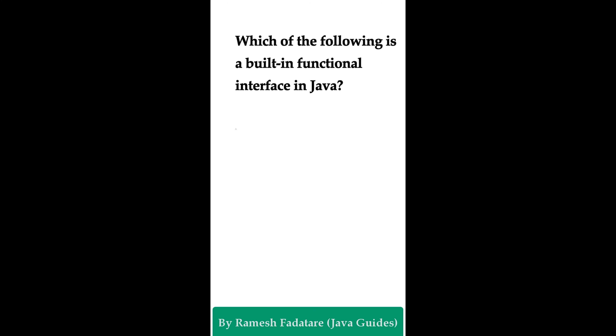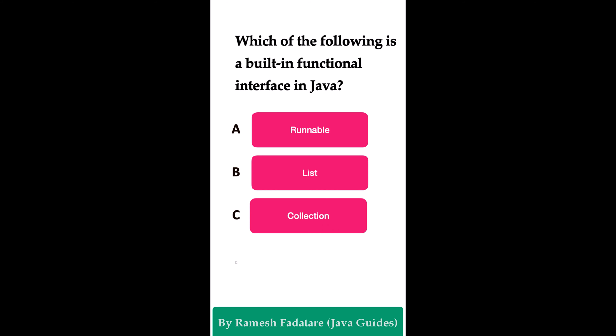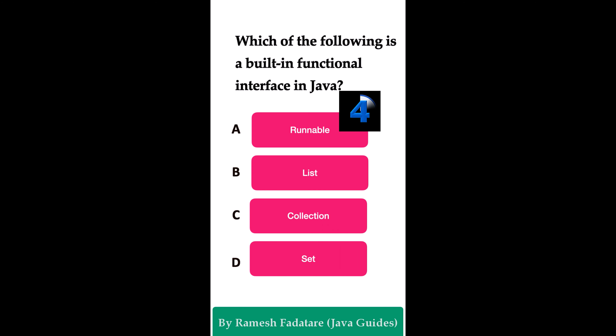Which of the following is a built-in functional interface in Java? Option A: Runnable interface. Option B: List interface. Option C: Collection interface. Option D: Set interface. The correct answer is Runnable interface. Runnable is a built-in functional interface in Java, often used with lambda expressions for creating threads. It has a single abstract run() method. To implement it, you can use a lambda expression or a class that implements Runnable and provides the run() method implementation.